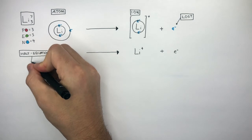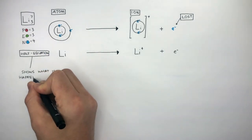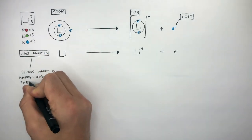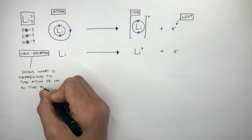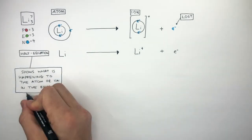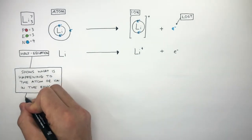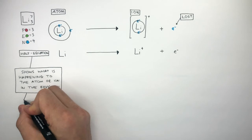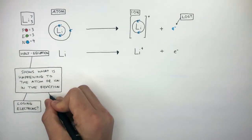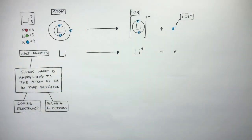Half equations specifically show what is happening to the atom or ion in the reaction — whether the atom or ion is losing electrons or gaining electrons. There are rules to writing half equations which we're going to go through and link to how this lithium atom has lost an electron to become a lithium cation.